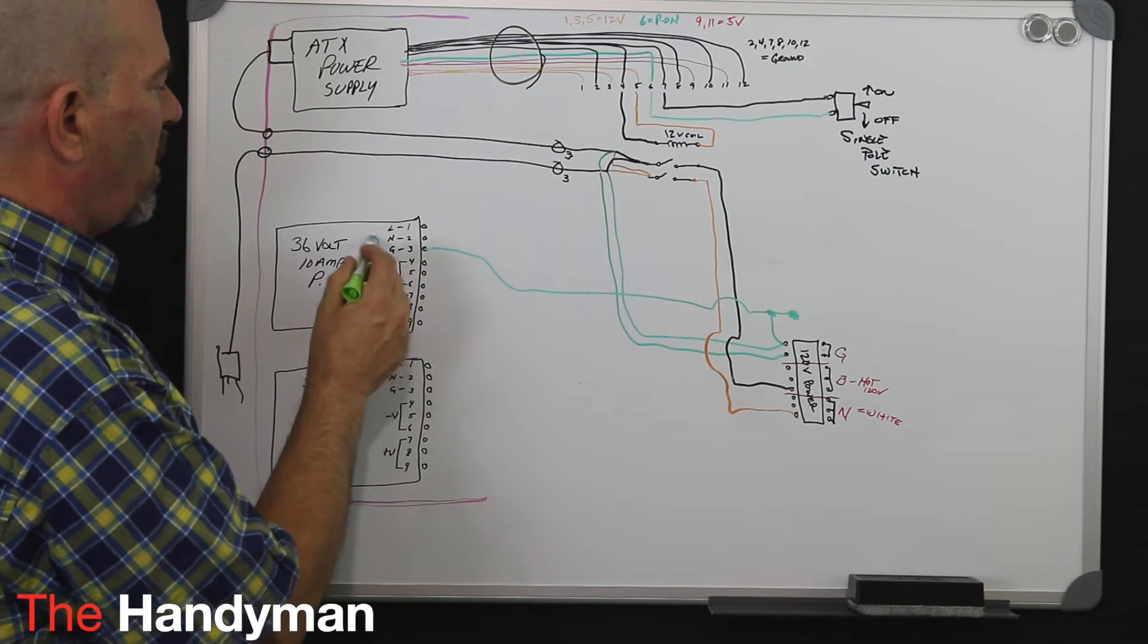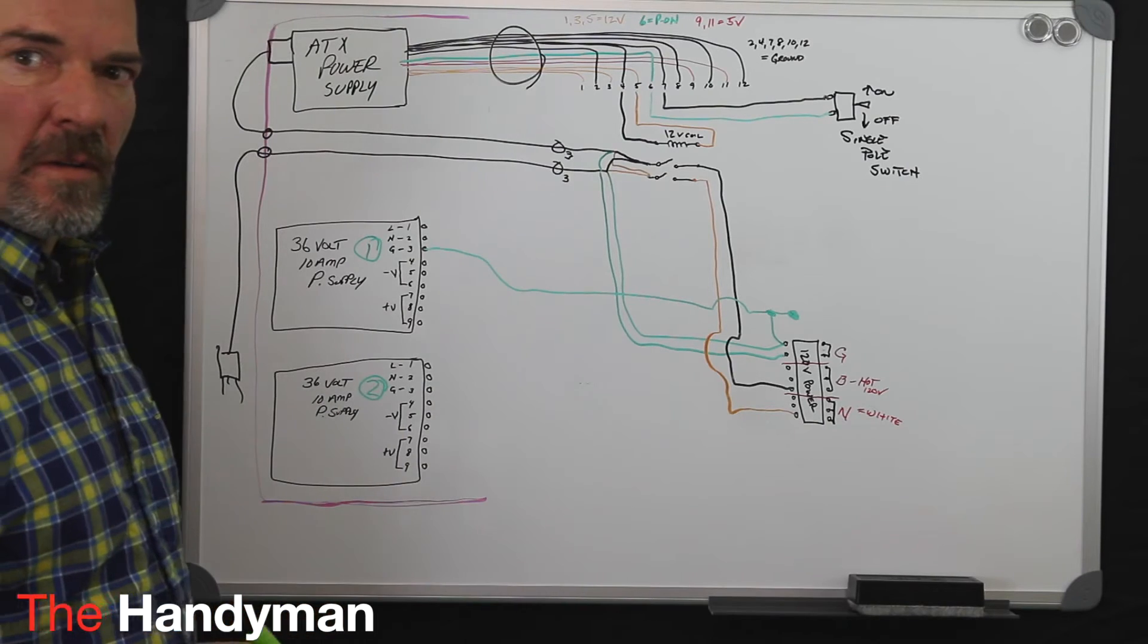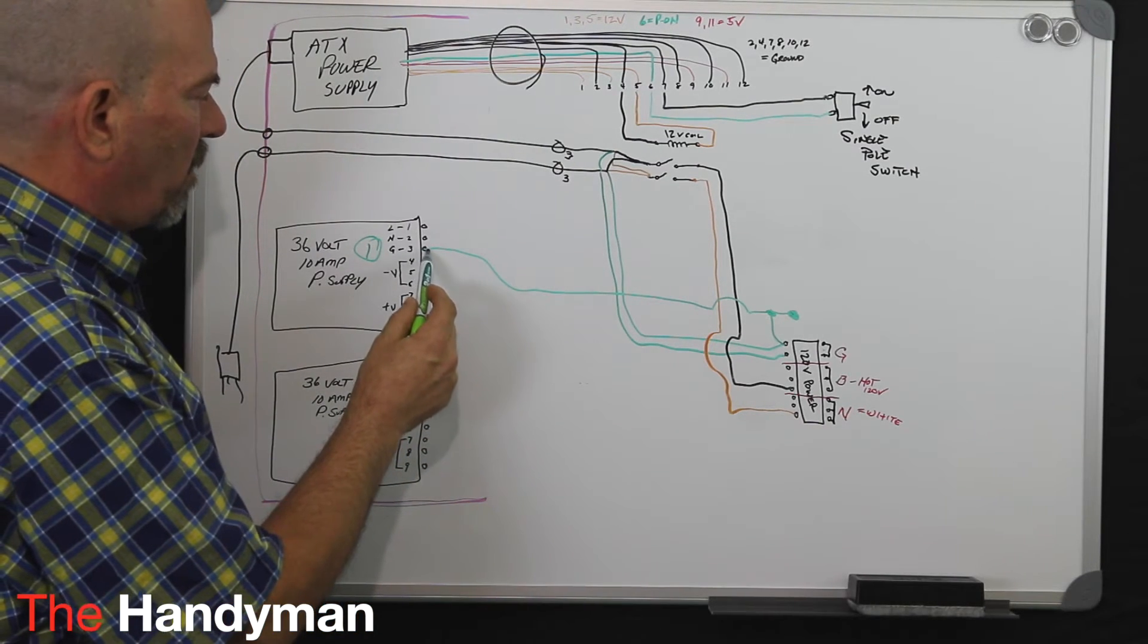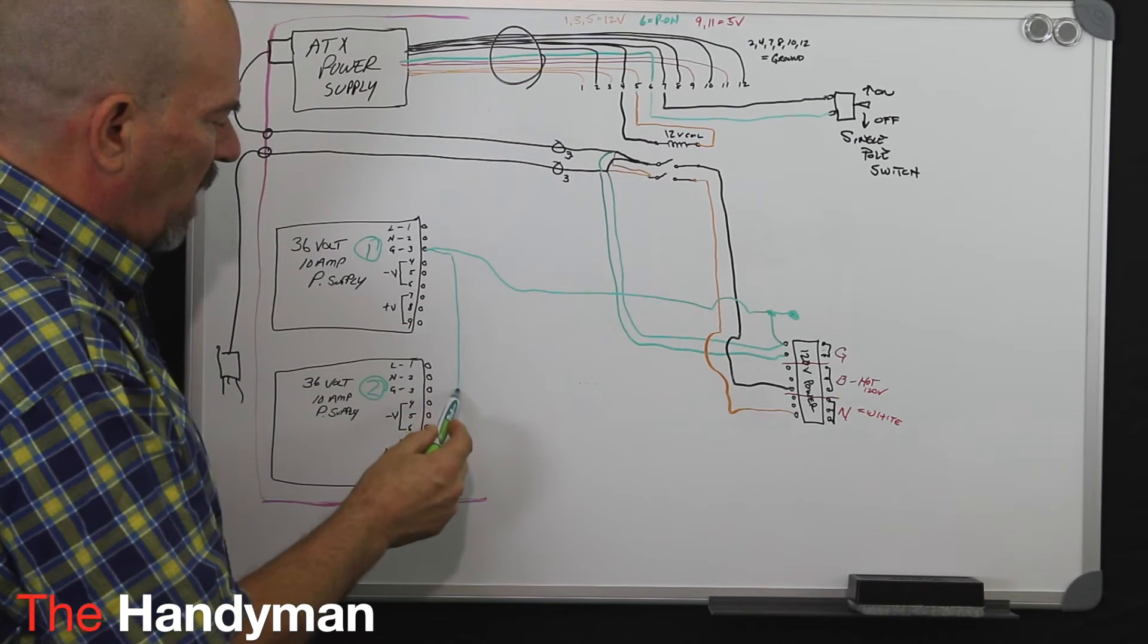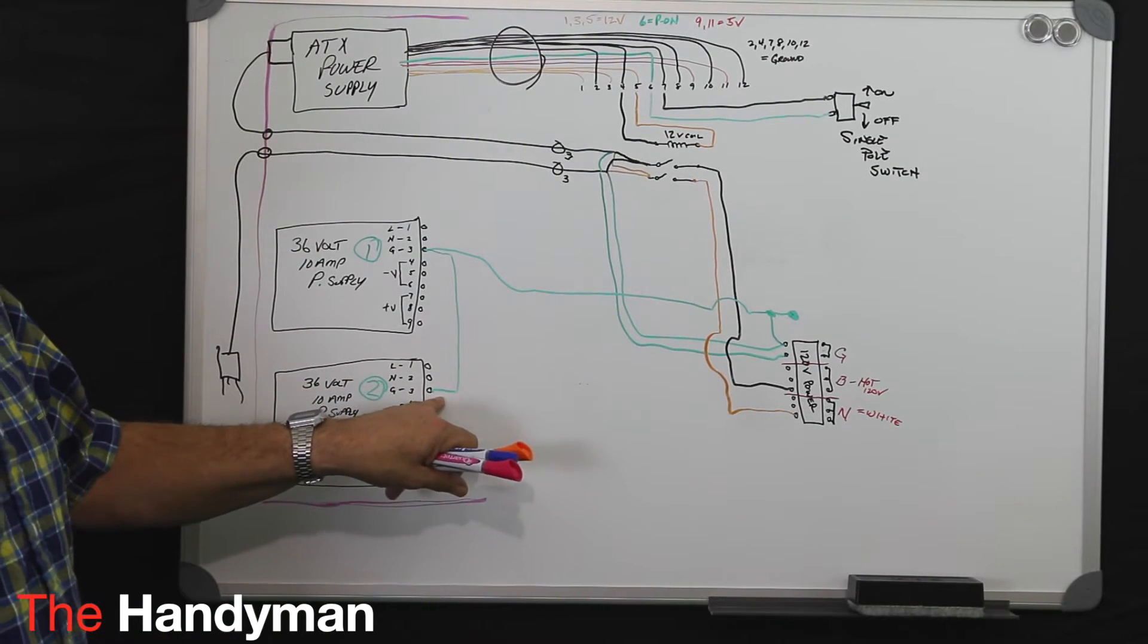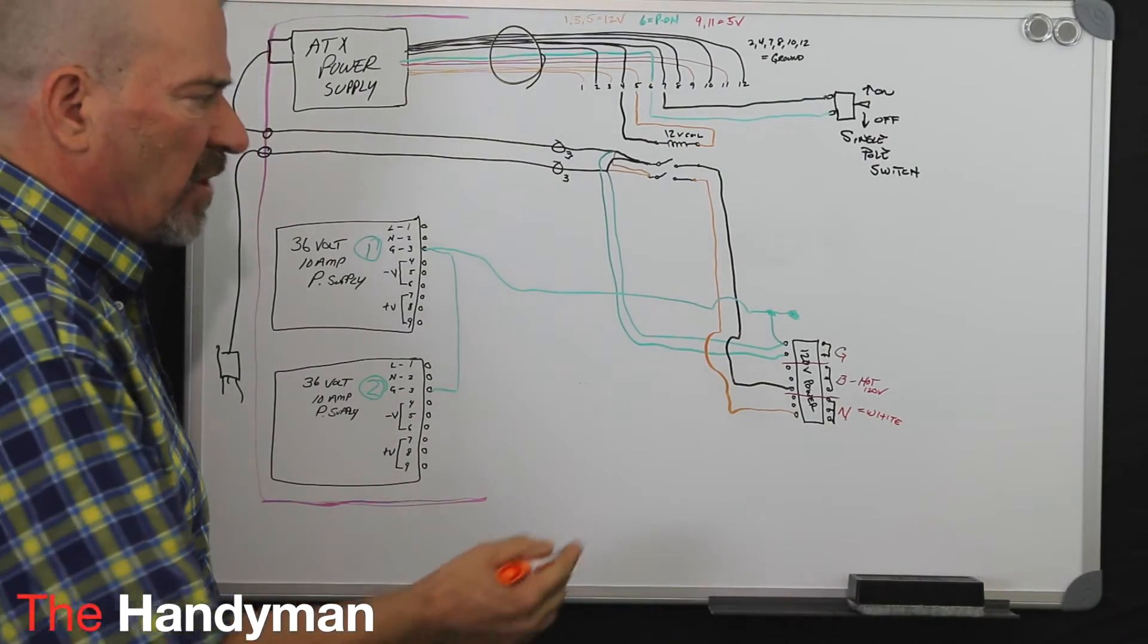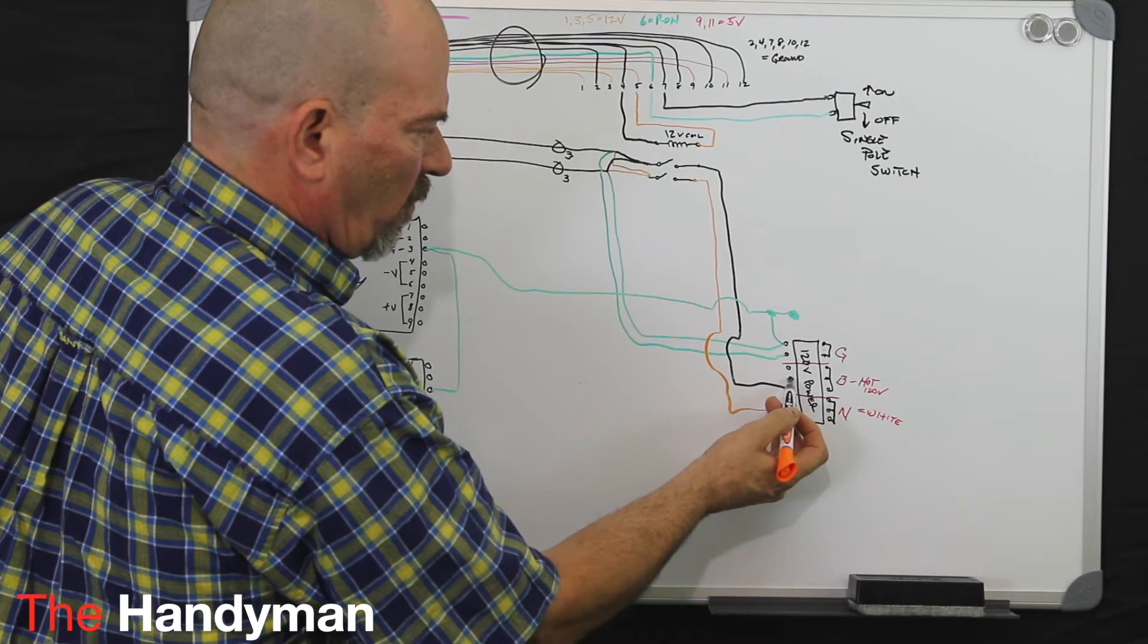We'll call this power supply number one, power supply number two. Then all I did was I made a jumper, I came off this ground and I came down and I contacted it under the ground screw number three for the other power supply. And by now you should see where this is going.